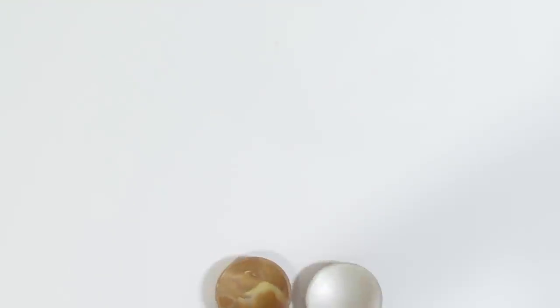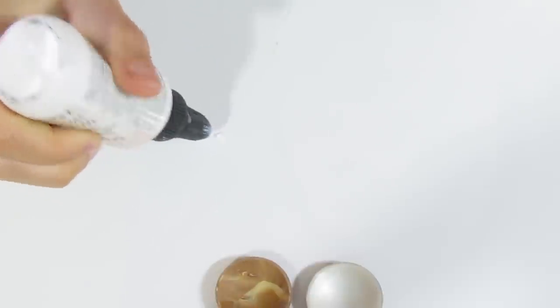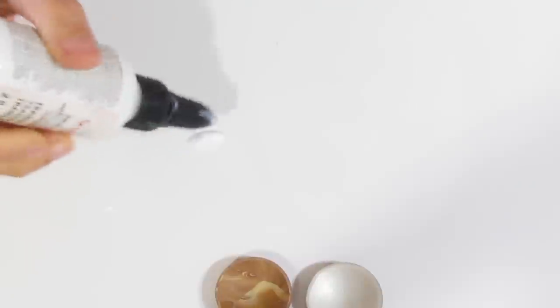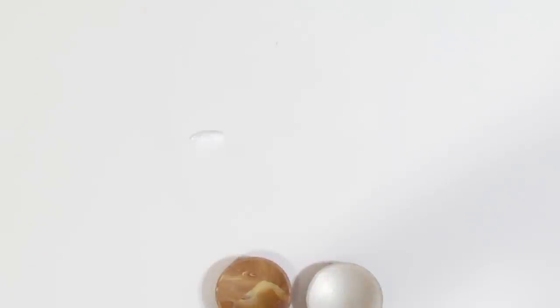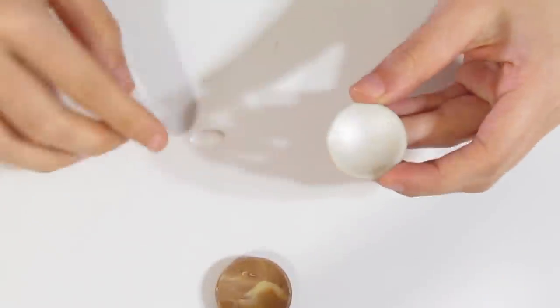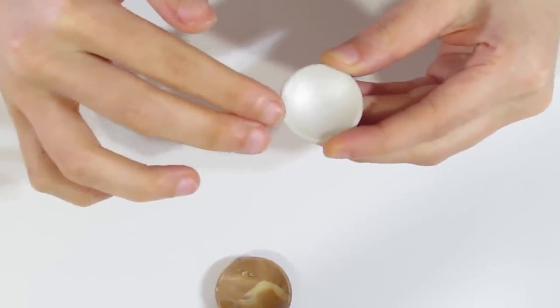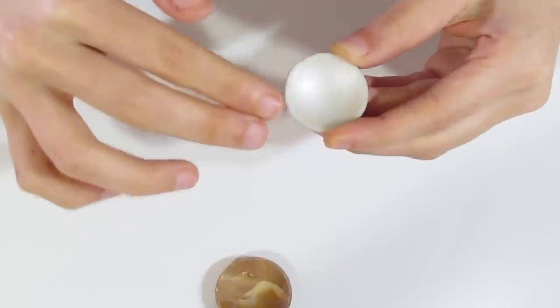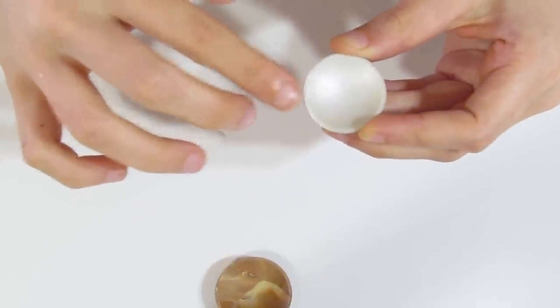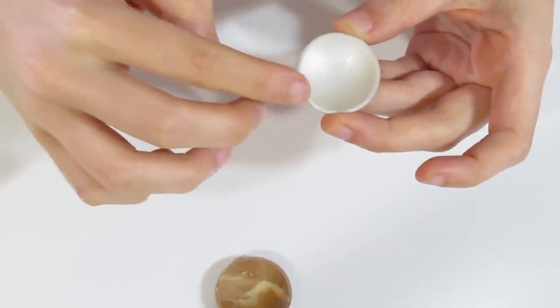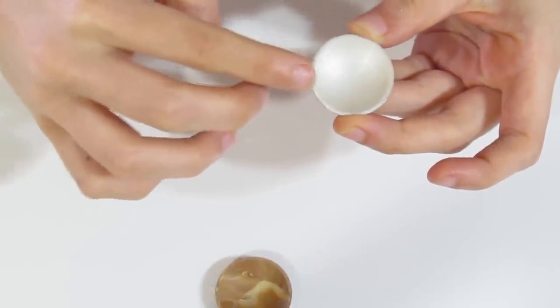Now I would recommend using Sculpey Bake and Bond or Liquid Sculpey Translucent simply because this translucent clay is very thick. It's not very runny. It's got a low viscosity. So it's very sticky and it works very well for this. Where something like Fimo or Kato liquid clay although it would work it's a lot trickier to work with simply because of the fact that is runny.